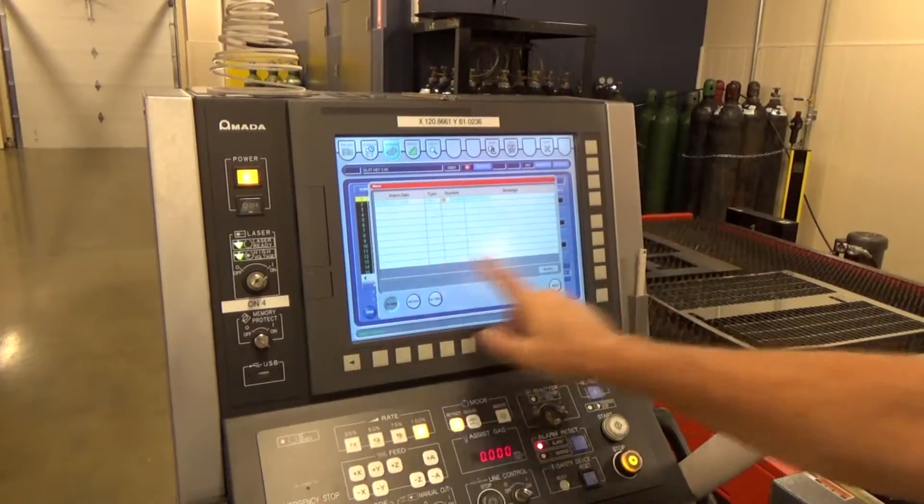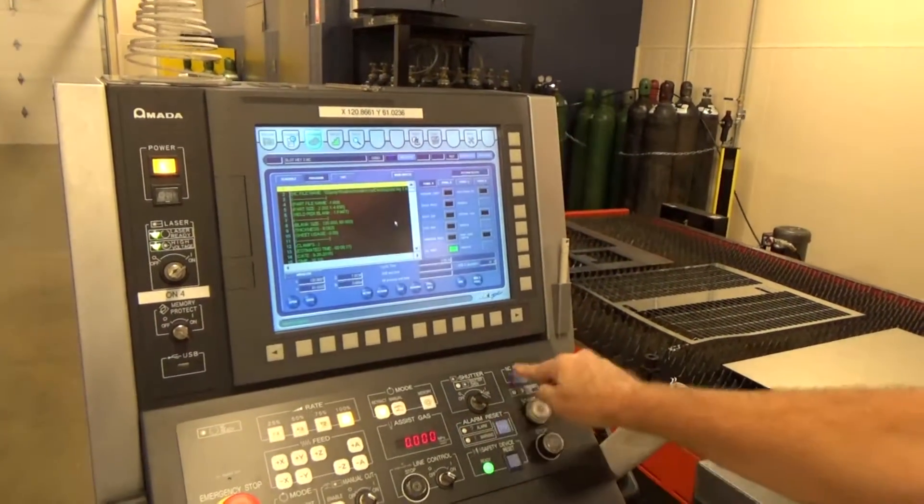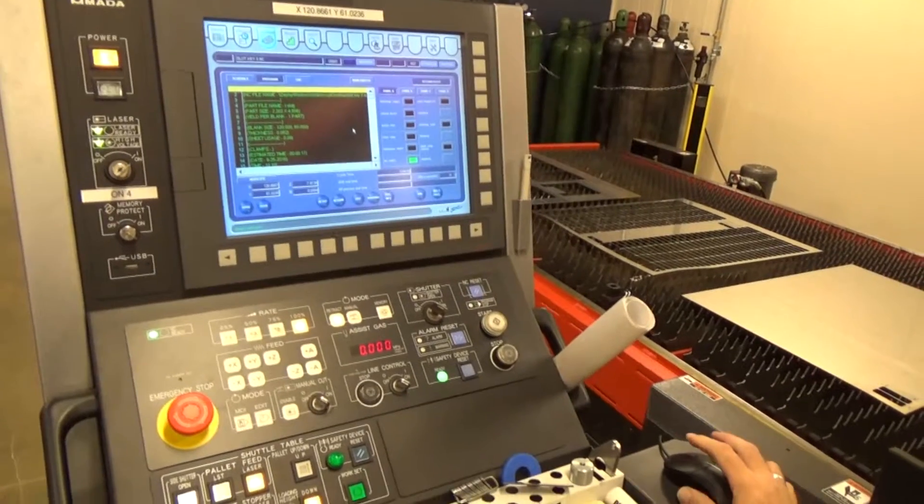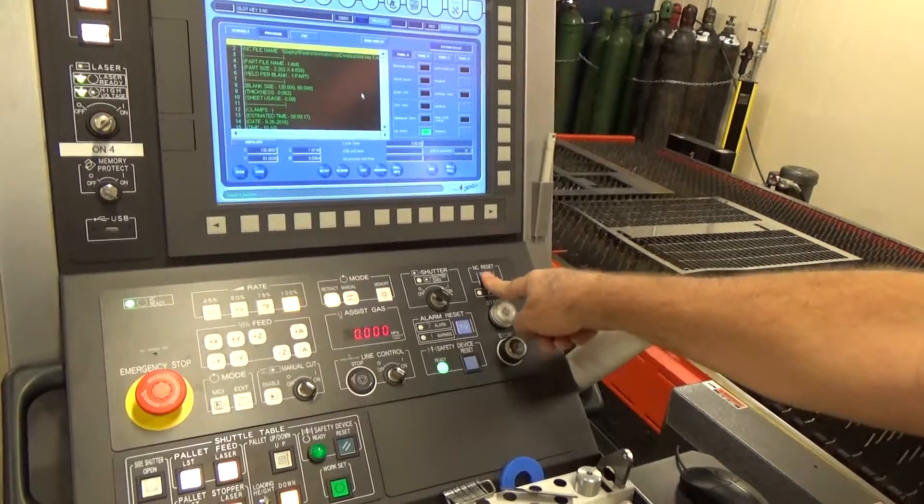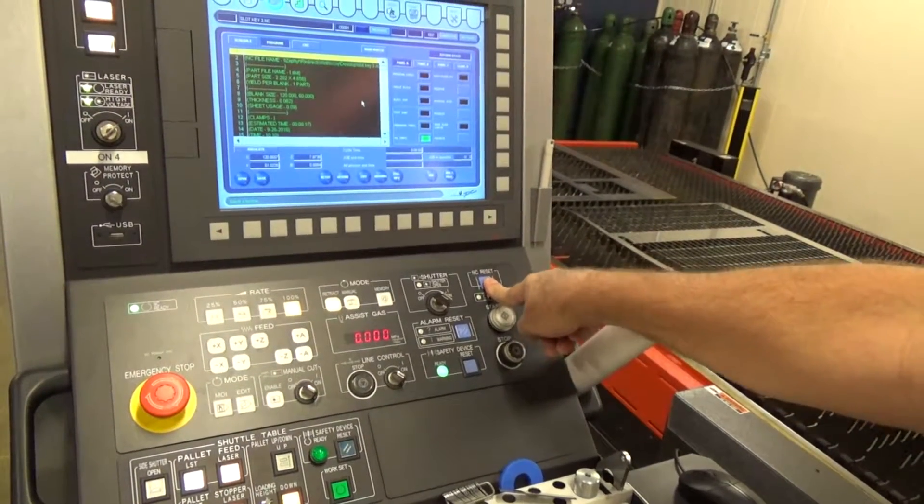Now that we have our high voltage on, we're going to clear our alarms. How did you do that? What did you push to clear the alarms? Safety device, alarm reset, NC reset. NC reset rewinds the program.